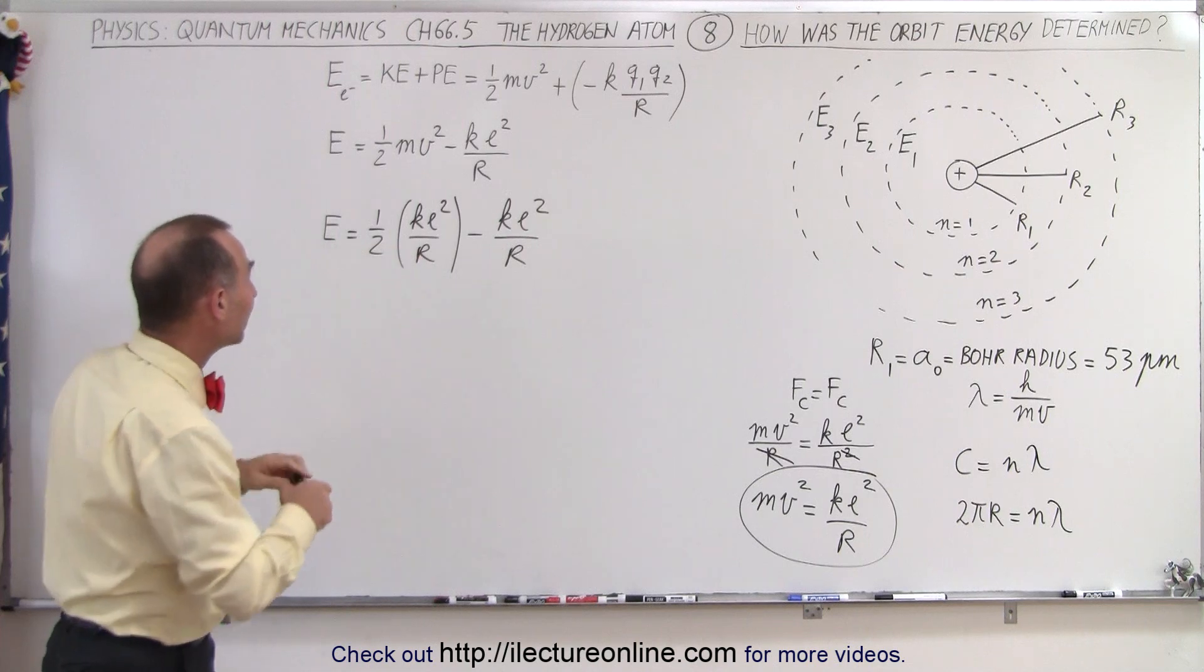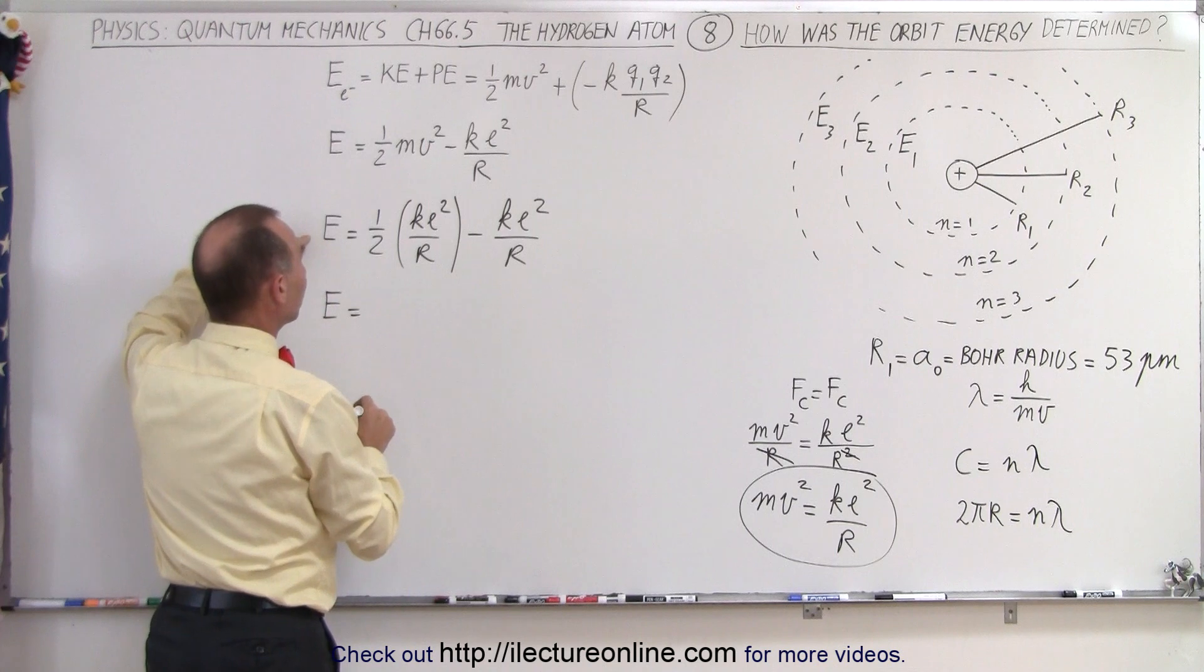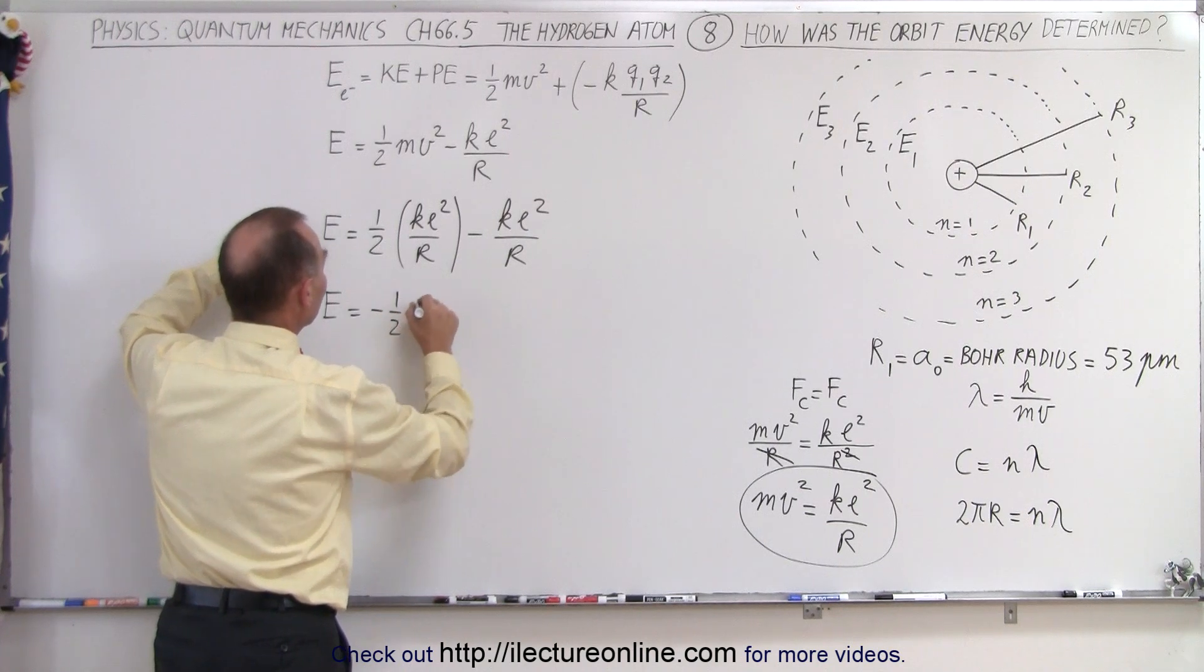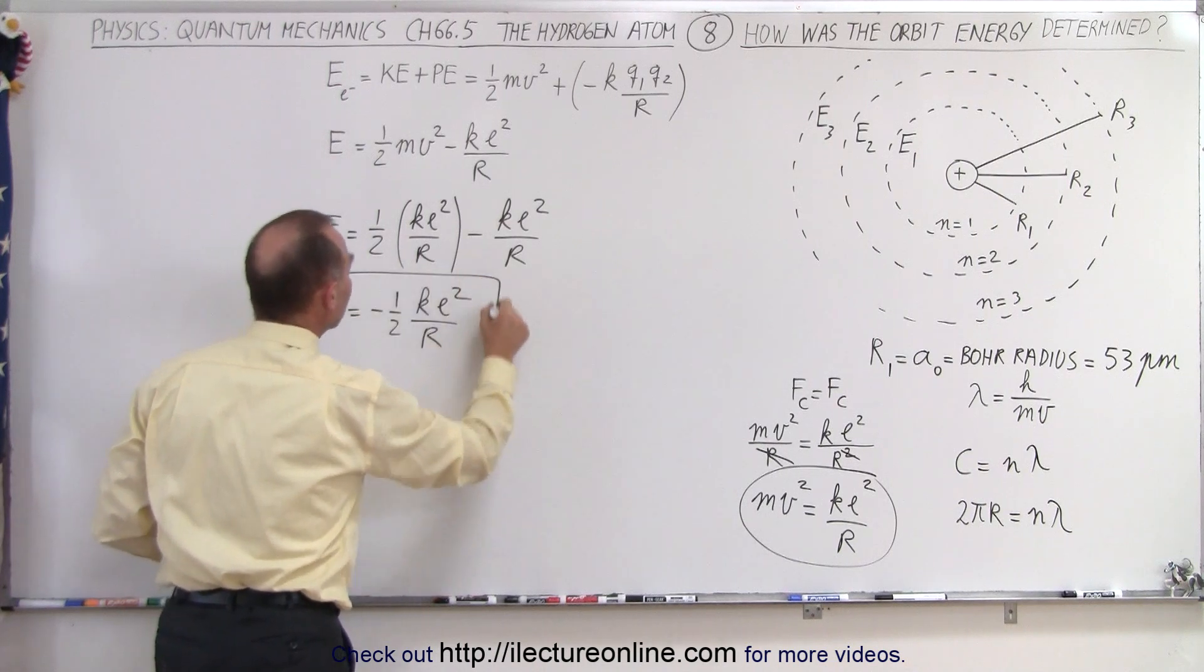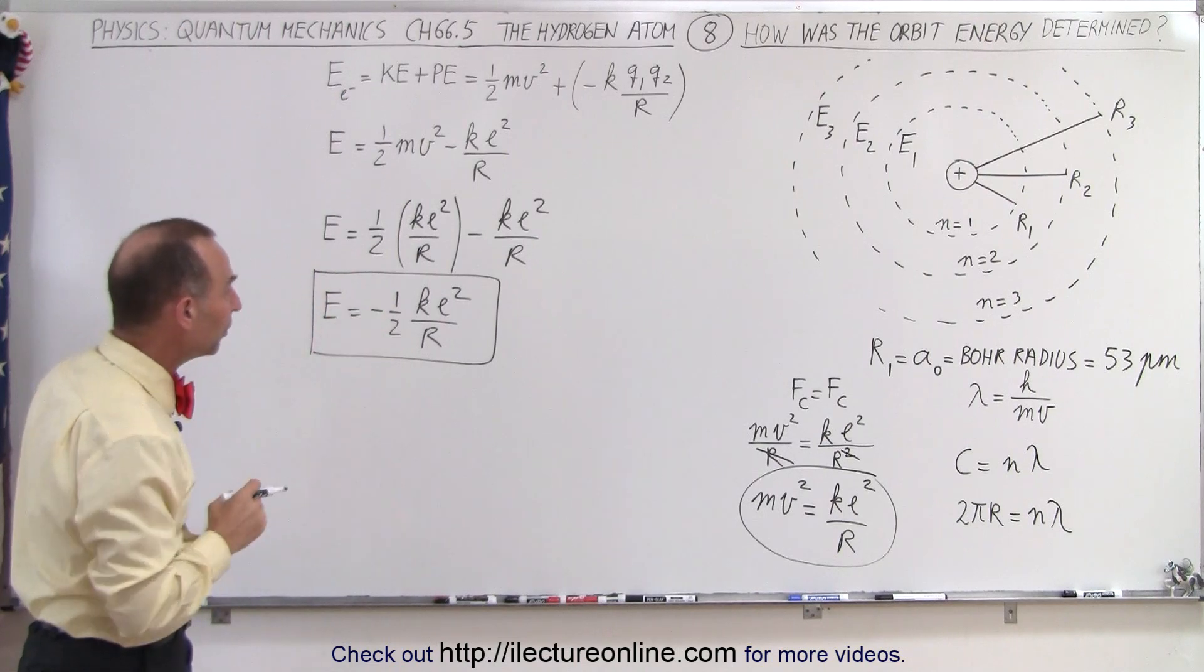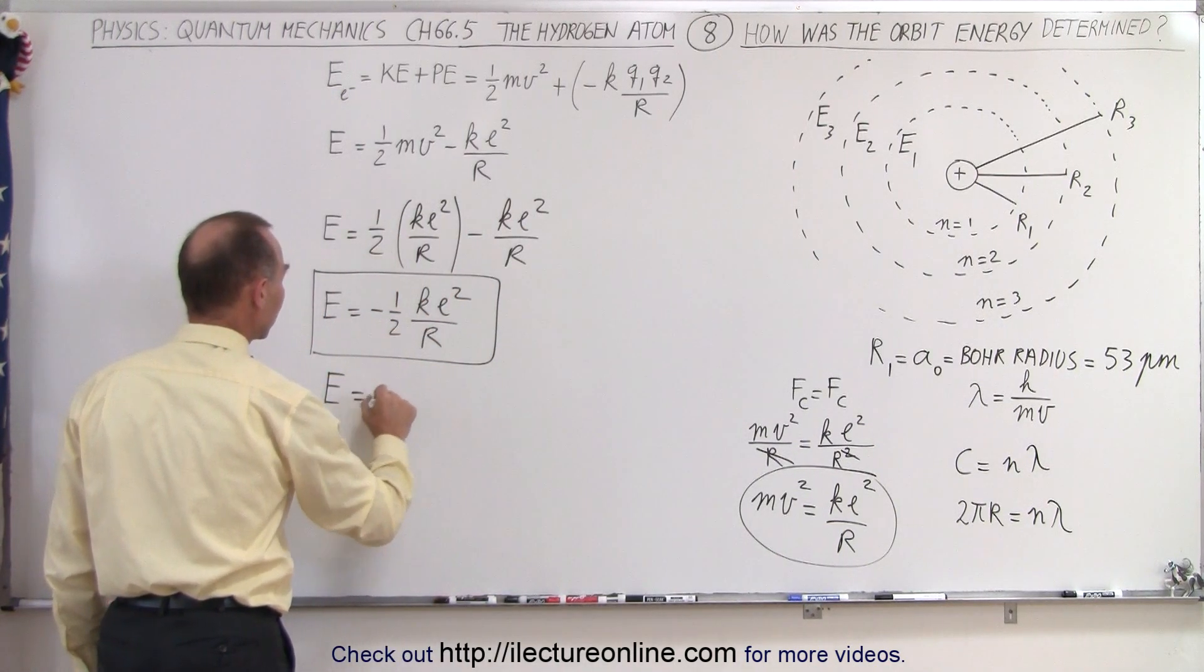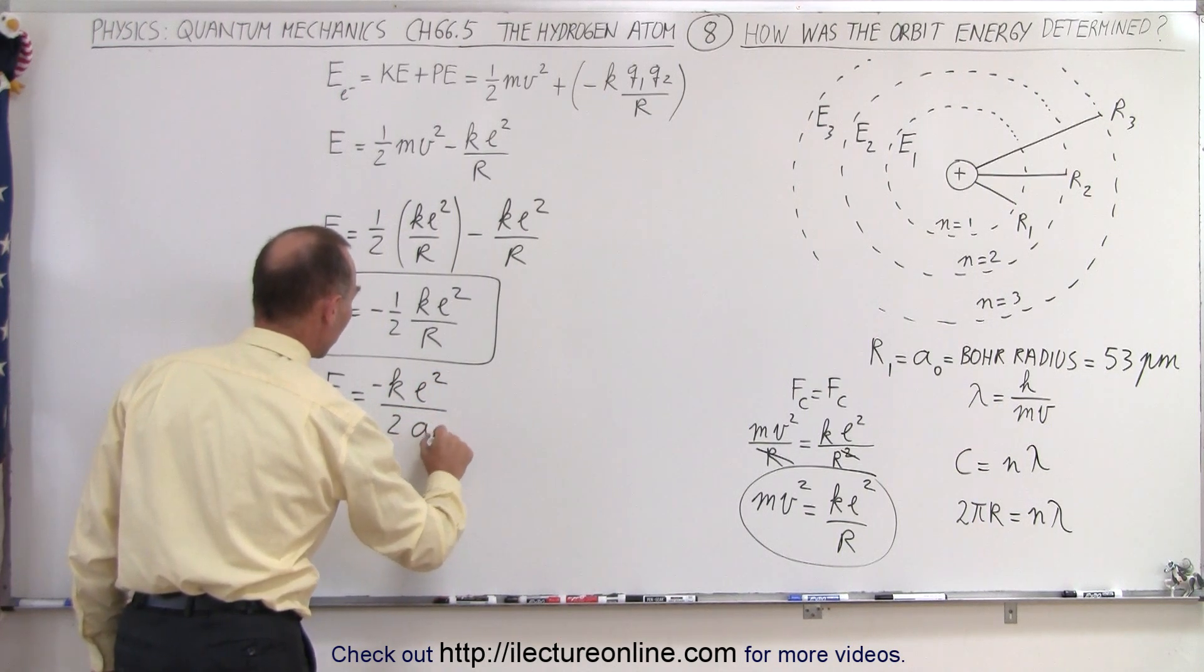Now if we combine these two, we can then see that the energy of an electron going around the nucleus of an atom in a hydrogen atom, that's going to be equal to minus 1/2 ke² divided by r. Now, of course, that would be the energy in the innermost energy level, in the innermost orbit, where r is going to be equal to the Bohr radius. So we can say that we can rewrite this as the energy is therefore equal to minus ke² divided by twice the Bohr radius.